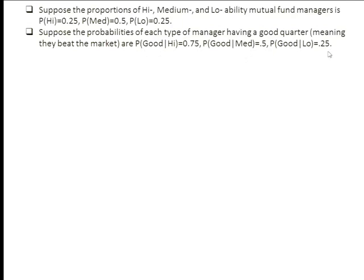This area here is going to be the event that a high ability manager gets a good outcome, and it's going to have a length of 0.75, so the joint probability is 0.75 times 0.25. The probability of the event that a medium ability manager comes up with a good outcome is going to be a square with length and width of 0.5. The conditional probability of a good outcome given that you are low quality is 0.25, so the joint probability of being both low ability and having a good outcome is 0.25 times 0.25.